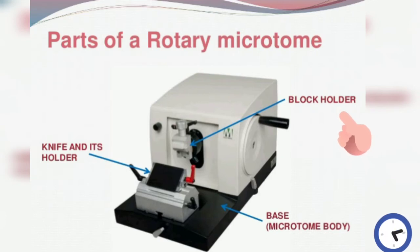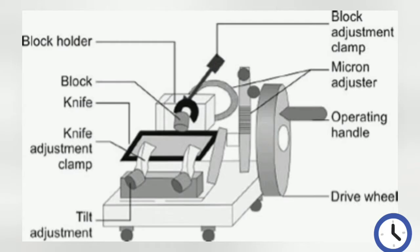The base you are seeing is the base of the microtome. These are all the parts of the rotary microtome. Write it down in your notes and remember it so you can write it in the exam. Next we will discuss about the advantages of the rotary microtome.